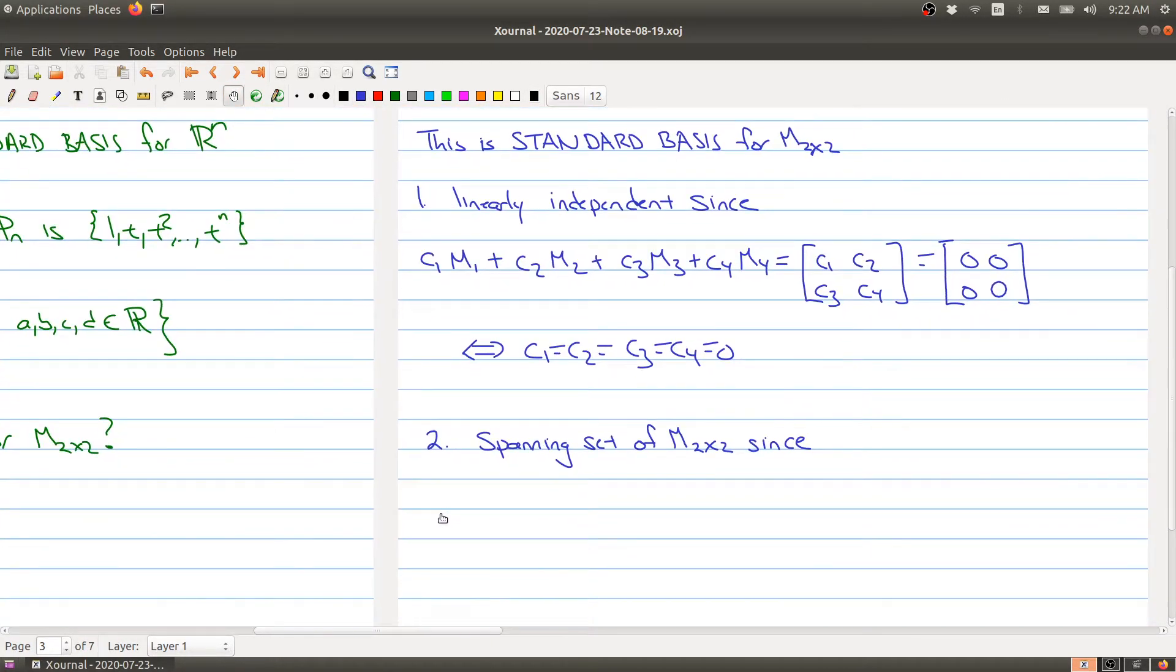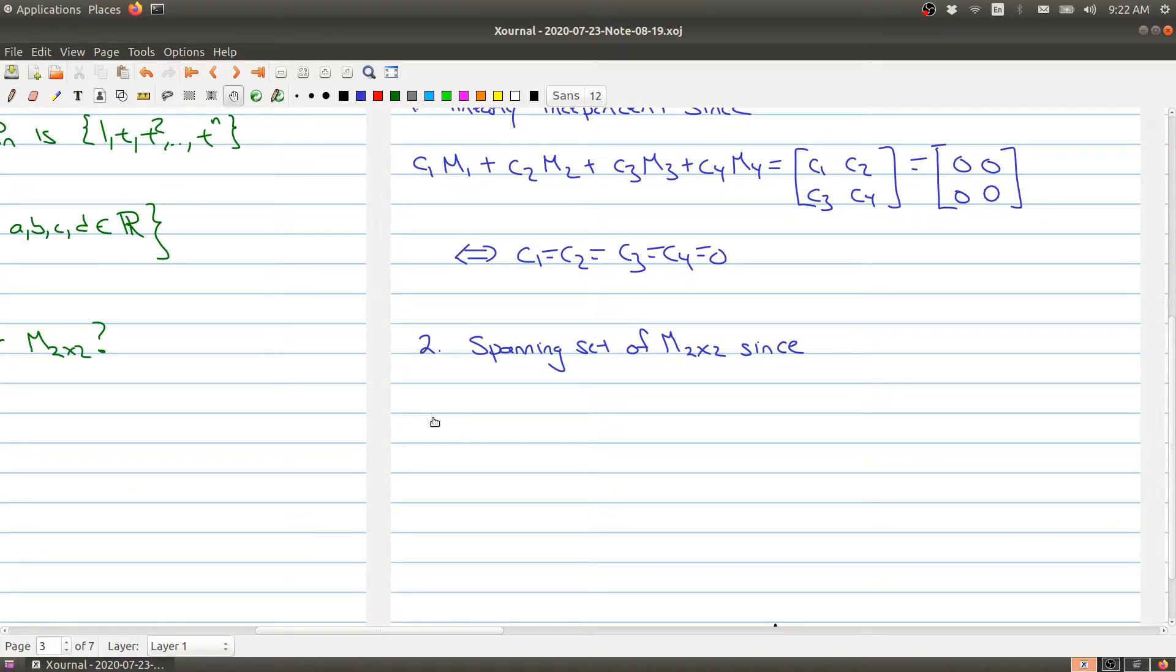What about a spanning set? Why is it a spanning set? Well take any matrix in our set, let's say I take [A,B; C,D], and I want to write it as a linear combination of those matrices. Well it's A times the first matrix plus B times the second matrix, and you can see why that is because this gives me a matrix with an A in the top left-hand corner and zero everywhere else. This gives me a matrix with a B in the top right corner and zero everywhere else. And then we carry on, C times M3 and D times M4. And this is clearly in the span of our four matrices.